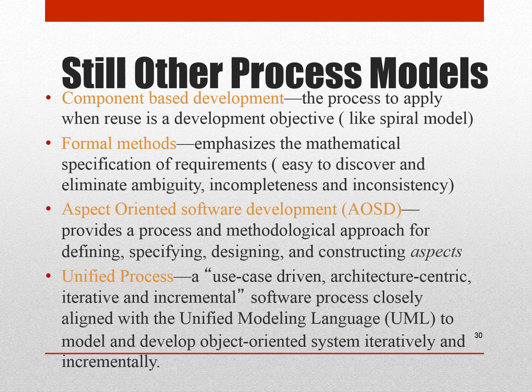There are still other process models: component-based model, formal methods, aspect-oriented software development, and unified process. When we apply a component-based development objective like the spiral model, we term it component-based development. Formal methods emphasize the mathematical specification of requirements, which makes it easy to discover and eliminate ambiguity, incompleteness, and inconsistency. Aspect-oriented software development provides a process and methodological approach for defining, specifying, designing, and constructing aspects. The unified process is use-case driven, architecture-centric, iterative, and incremental — closely aligned with the Unified Modeling Language to model and develop object-oriented systems iteratively and incrementally.